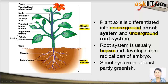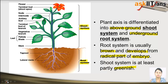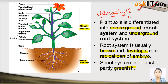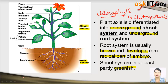The root does not need to have the presence of green colored pigment chlorophyll. It is usually brown in color and it develops from the radical part of the embryo. The shoot system is at least partly greenish — it has to possess green color because the green color is due to the presence of chlorophyll pigment. This chlorophyll plays a main role in photosynthesis, which is the process by which a plant prepares its food.